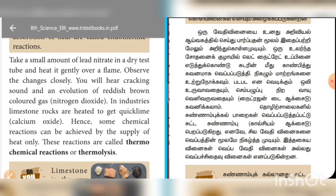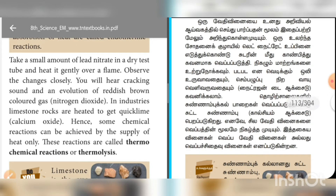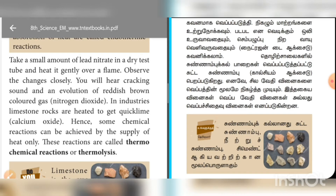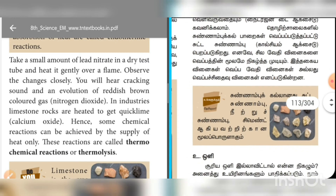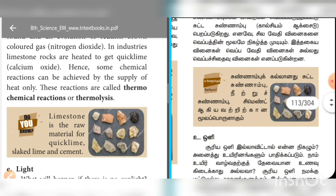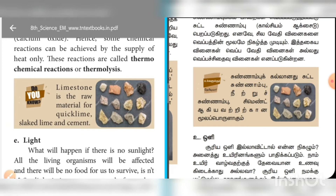Take a small amount of lead nitrate and heat it up in a dry test tube. The chemical reactions are thermolysis. This is the raw material for quick lime, slaked lime, and cement.